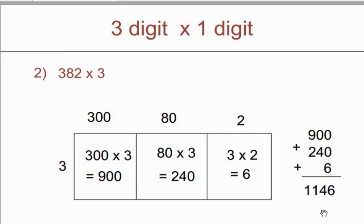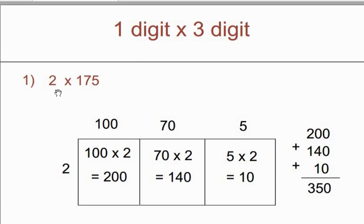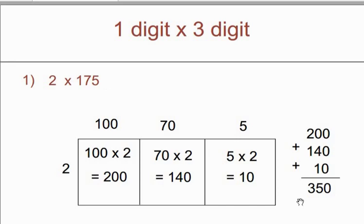Here we showed 3-digit by 1-digit number multiplication. If there is a 1-digit by 3-digit number, the procedure will be the same. Let's see it with an example. For 2 multiplied by 175: for 175 we write 100 plus 70 plus 5, and 2 as it is. Take 100 and 2 — you will get 200. Take 70 and 2 — you will get 140. Take 5 and 2 — you will get 10. Summation: 200 plus 140 plus 10 gives 350, the answer of 2 multiply by 175.